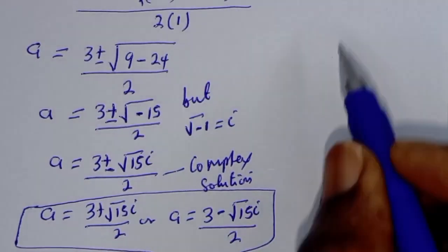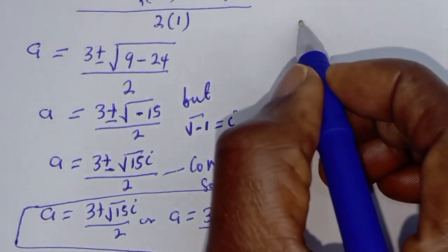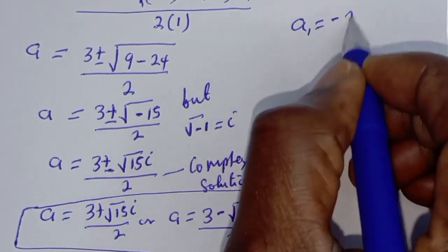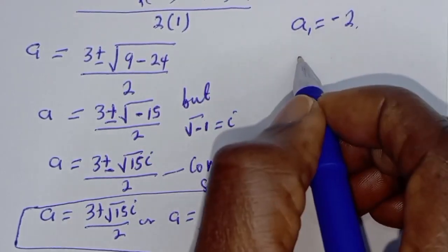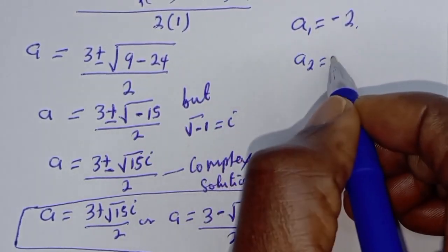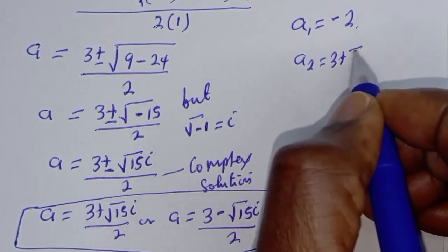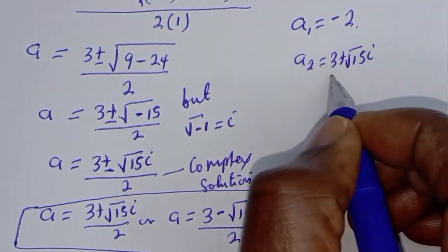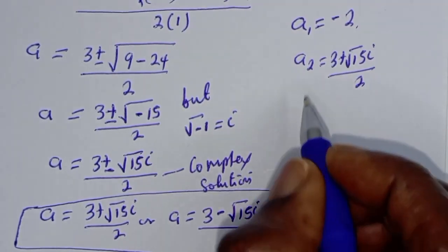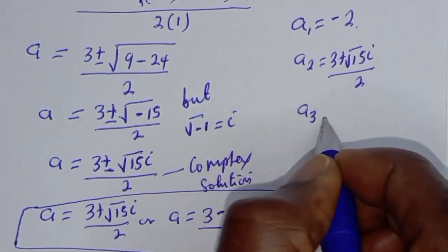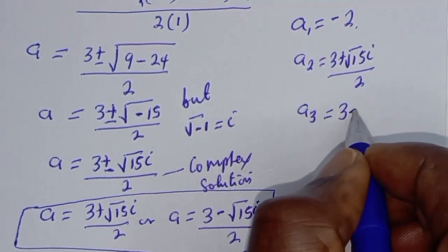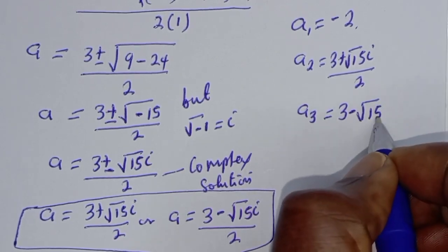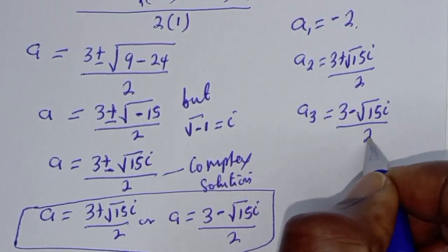Therefore our final answers are: a₁ equals minus 2, a₂ equals (3 plus square root of 15 i) over 2, and a₃ equals (3 minus square root of 15 i) over 2.